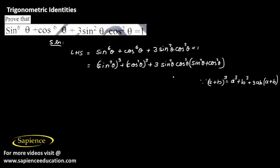This is also of the same format where A will be sin square theta and B will be cos square theta. So this whole term can be written as sin square theta plus cos square theta the whole cube.